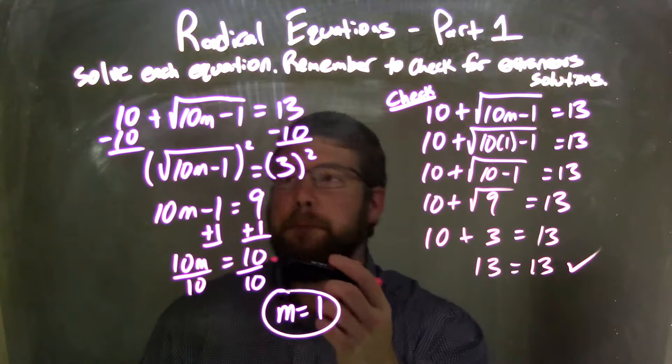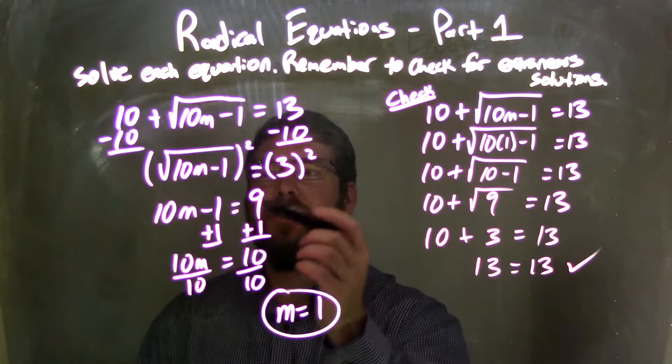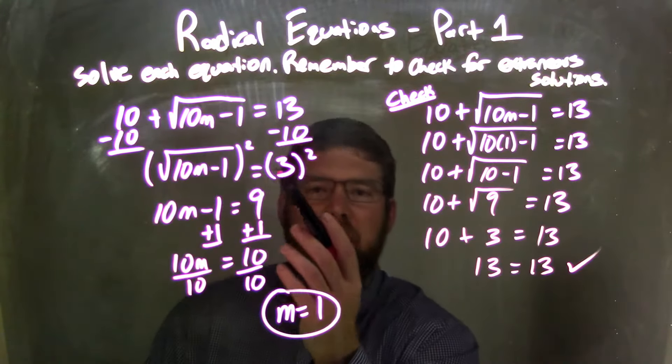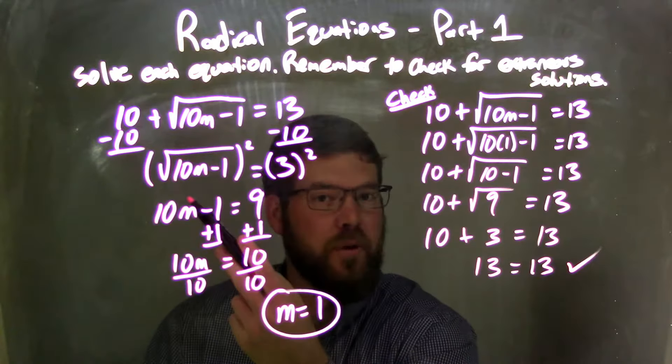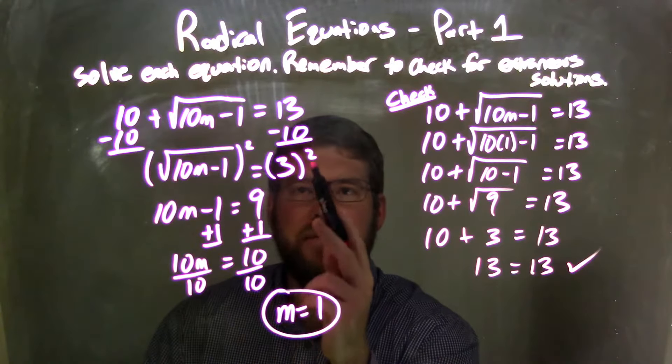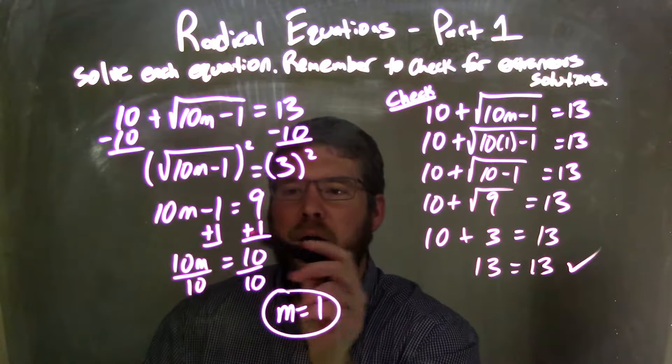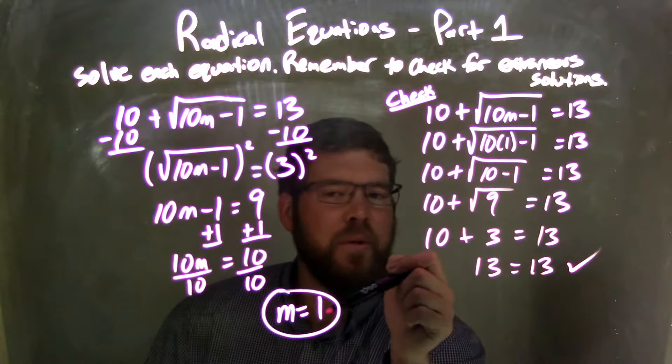All right, so let's recap. We started with 10 plus the square root of 10m minus 1 equals 13. I subtracted 10 from both sides to get the radical by itself. Then I squared both sides to eliminate the square root, giving us 10m minus 1 equals 9, 3 squared being 9. I added 1 to both sides, got 10m equals 10, divided by 10, leaving me with m equals 1.